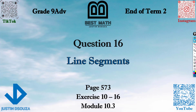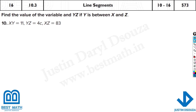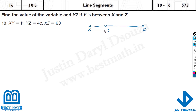Question 16 is about line segments — it's the first in the writing part from module 10.3. We need to find the variable in the question. The line segment is YZ, with Y in between X and Z. Let's draw a line — imagine two points X and Z, with Y somewhere in between.